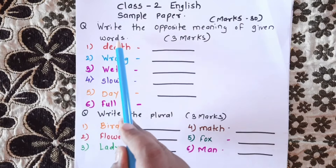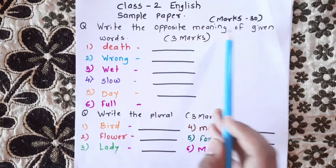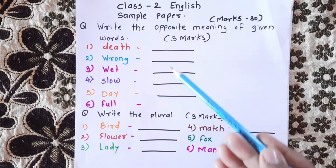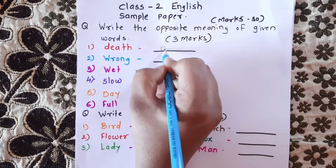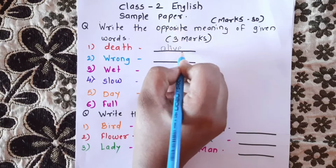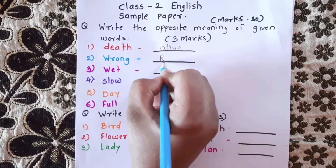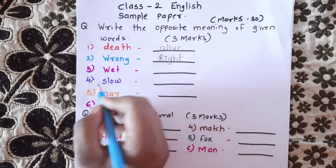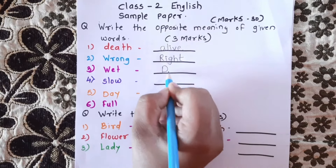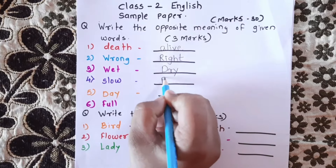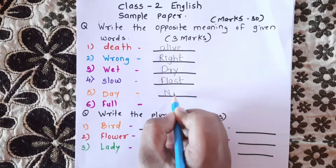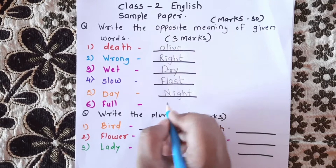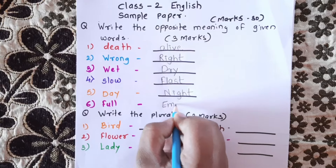The first question is: write the opposite meaning of given words. We are going to get a total of 6 marks. First, death — alive. Next, wrong — right. Wet — dry. Slow — fast. Day — night. Full — empty.